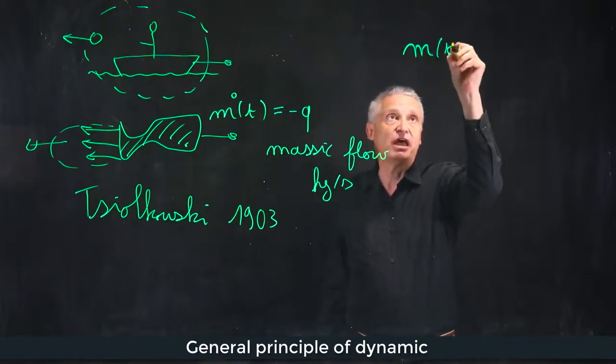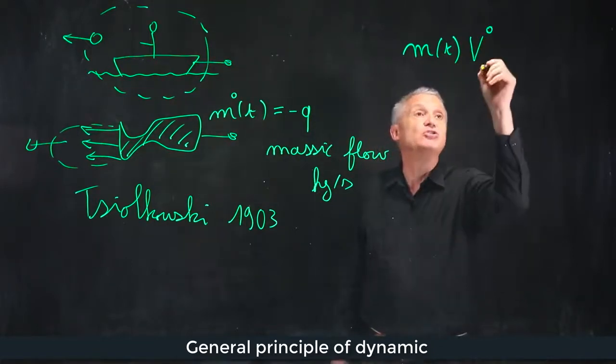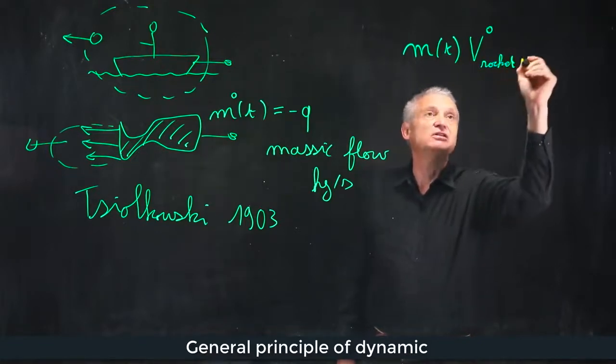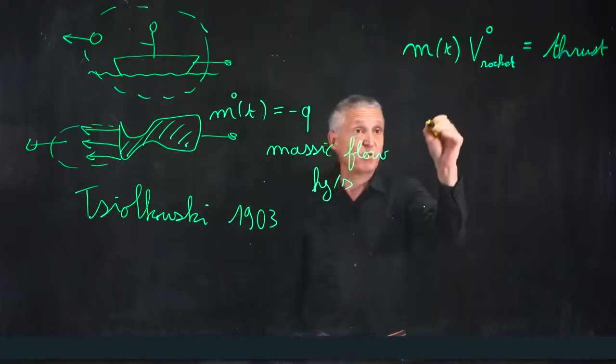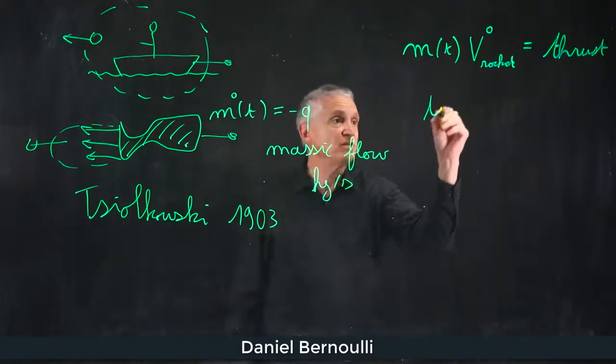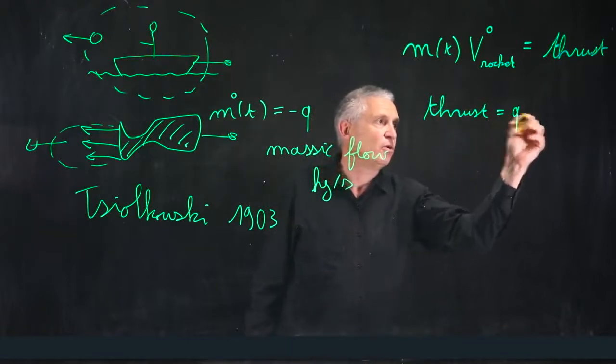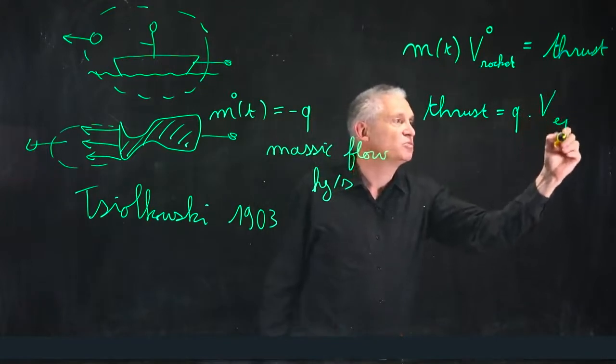Which is m(t) multiplied by the acceleration, which is the derivative of the rocket velocity, which is what the thrust. Mr. Bernoulli explained that the thrust is simply the product of the massic flow by the ejection speed.